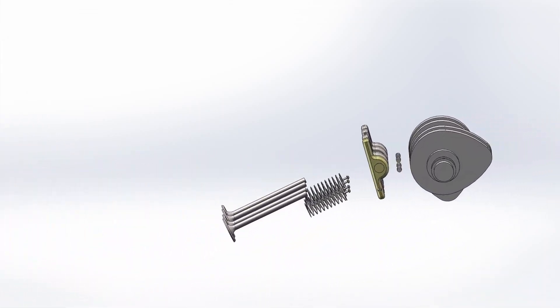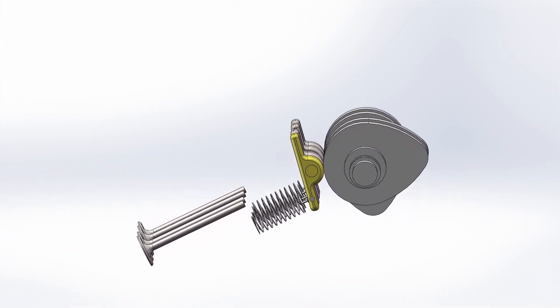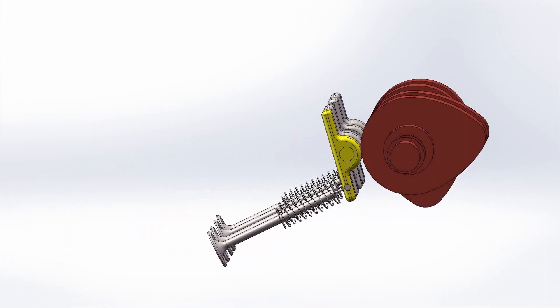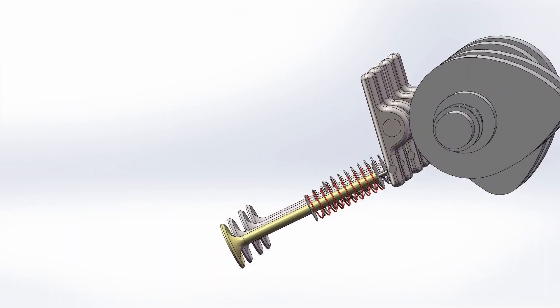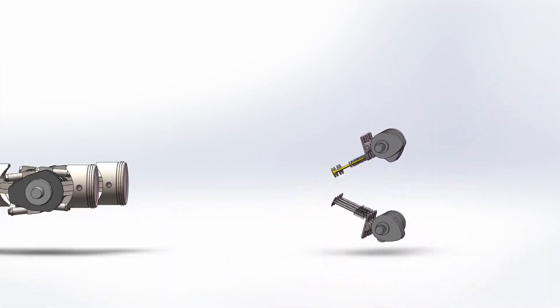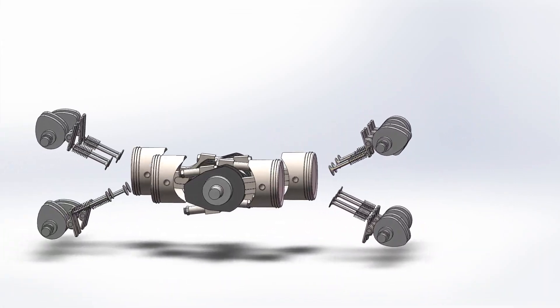Attached to the camshafts are rockers, which as they are moved by the cams, compress the valve springs, pushing the valves closer towards the pistons, creating space in the combustion chamber for air to go in and go out.